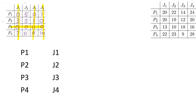Now that we can allocate, we look through the rows for zeros only. There are only 2 zeros in the first row, which means person 1 can only be allocated to job 1 or job 3. Person 2 can only be allocated to job 4, because that is the only zero in that row. Person 3 can do three jobs — job 1, job 2, or job 4. And person 4 can only do job 3.